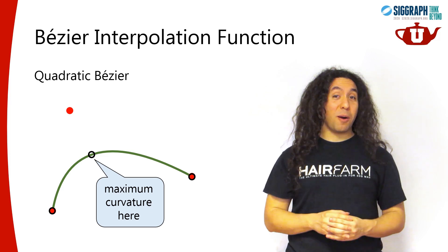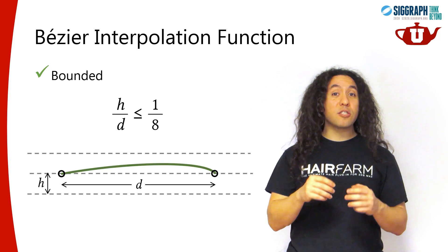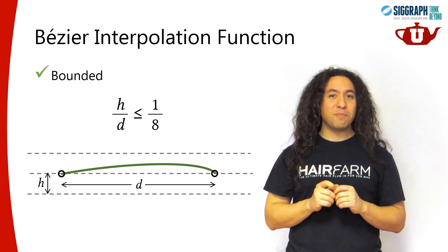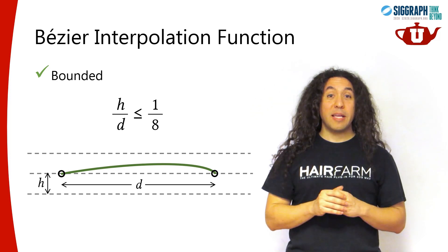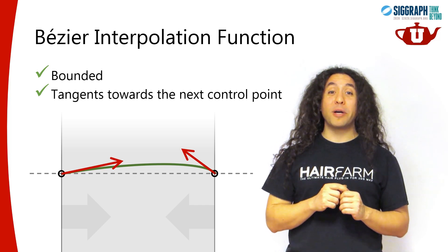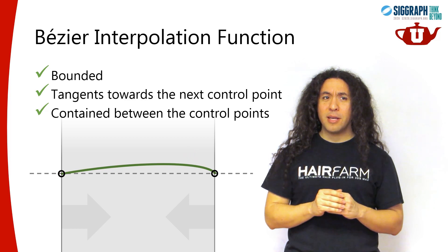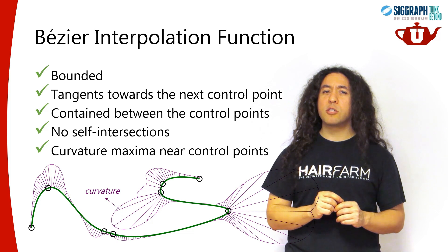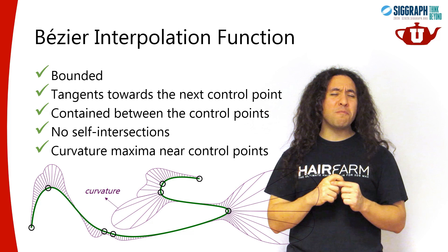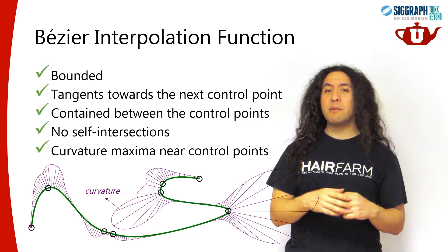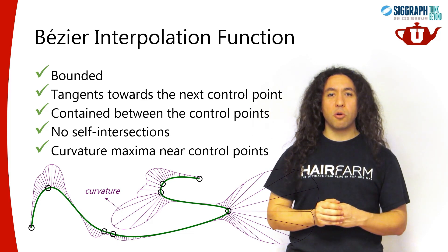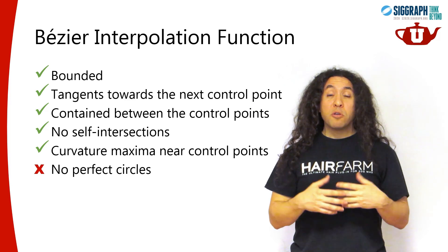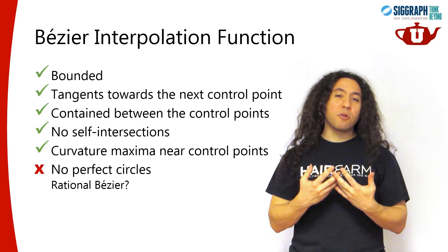This provides some very nice properties. First of all, the curve is bounded, such that the distance of the curve piece between two control points to the line connecting them cannot be longer than one-eighth of the distance between the two control points. So the curves are remarkably close to the control polygon. In addition, the tangent of the curve is always towards the next control point in both directions, which also ensures the curve is contained between the two control points. A curve piece cannot have self-intersections. Another interesting property is the curvature behavior: the maximum curvature is near the middle control point, and it doesn't move too far, remaining around the control point, which might make these curves relatively easy to control. However, because we are using a polynomial interpolation function, we cannot get perfect circular or elliptical arcs.